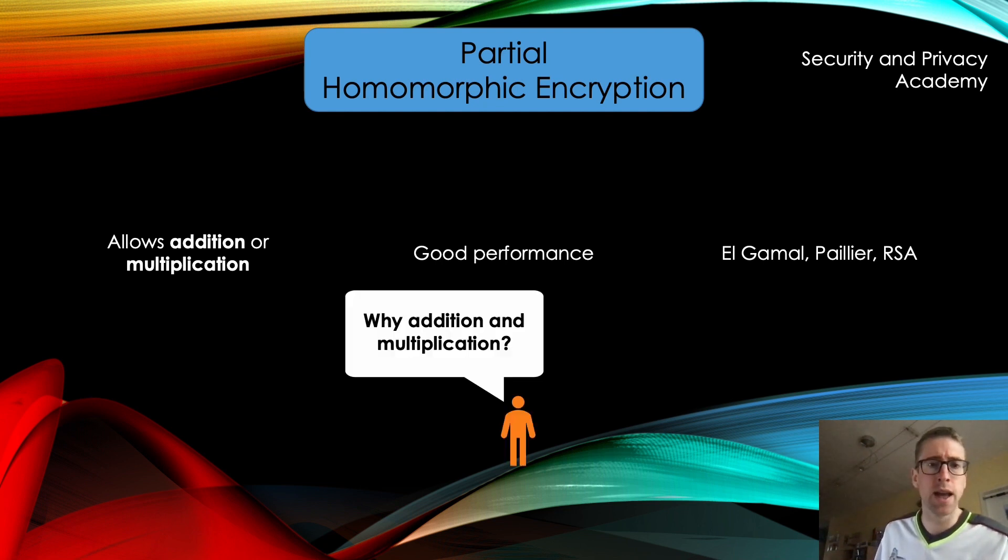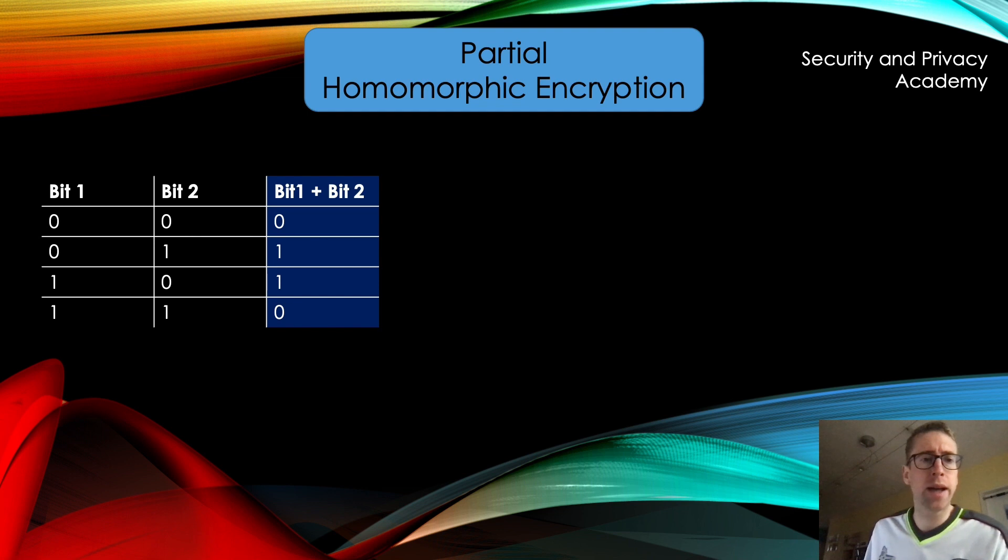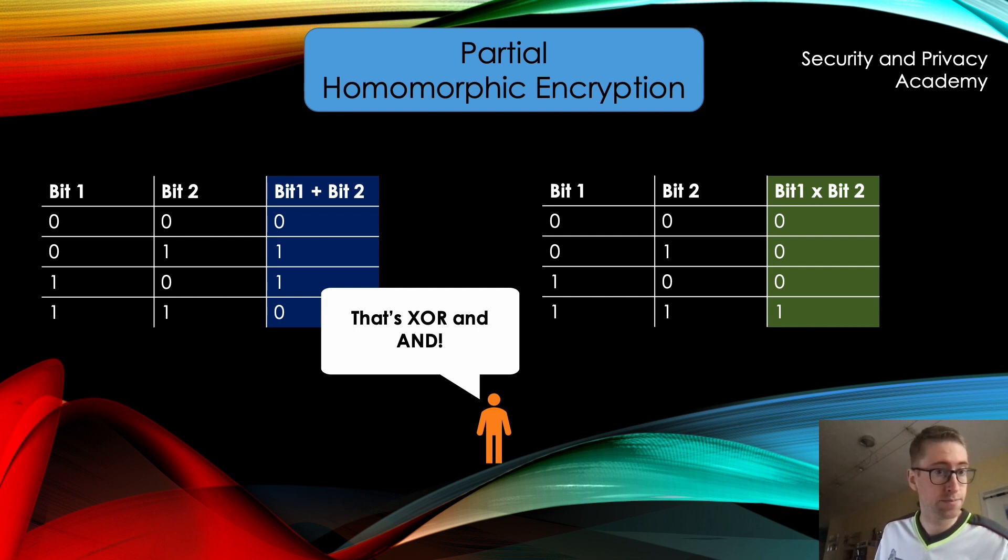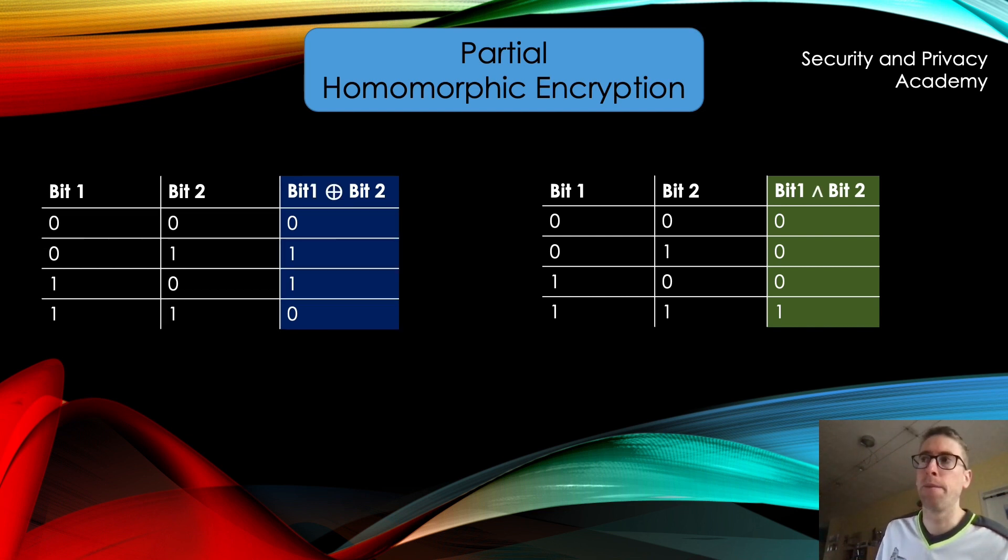You might now ask yourself, so why do we care about addition and multiplication? Well, let me explain. First, let's look at bit-by-bit addition, which is an addition modulo 2. And if we look at multiplication here on the right, we can see that's a bit-by-bit multiplication. And if you look at these tables, you can probably already tell what operations we are actually performing. So these two operations, addition and multiplication, actually correspond to two logical boolean operators, which are XOR and AND.